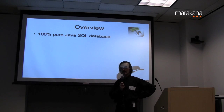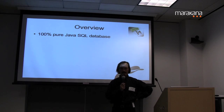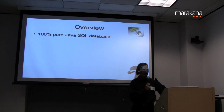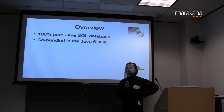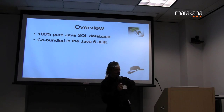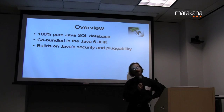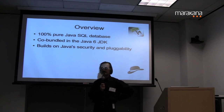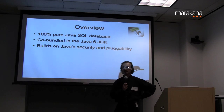So what is Java DB? It is a 100% pure Java database. That means you can embed it inside any Java application — it runs right there in the VM. There's no process switching between your application code and the database. It is co-bundled in the Java 6 JDK, so if you've got Java 6, you've got Java DB on your laptop right now. Its major strengths are Java's major strengths: it builds on the security and pluggability of the Java language and platform themselves.